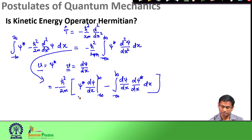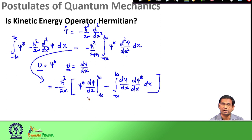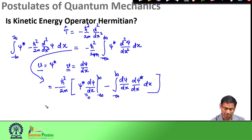When I look at the first term, ψ* dψ/dx, I have to evaluate these two terms at minus infinity and plus infinity. I use the same argument: if it is a well-behaved wave function it must vanish at minus infinity and plus infinity, and also its first derivative should also become zero at minus infinity and plus infinity. Therefore this term is again zero, and I am left with the remaining term where the minus and minus sign becomes a plus sign, giving ħ²/2m.